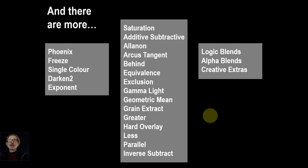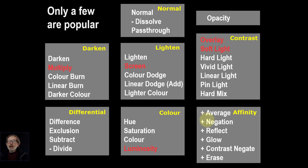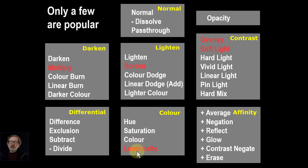We're going to look at a number of these extras and maybe try to replicate them, but only after we've gone through the main set of blend modes. As I said, only a few of these are popular, and these are the ones which are probably useful to learn first because they're very practical. We're going to look at these three here — Luminosity is just useful when you want to not change the color, when you're doing something like Curves.